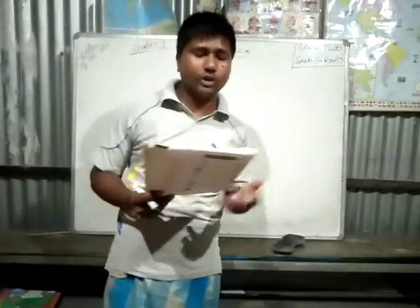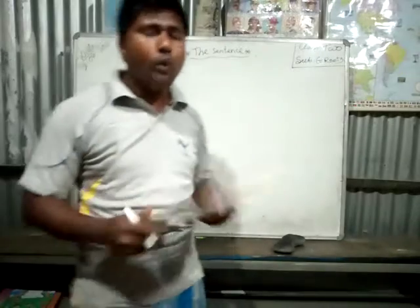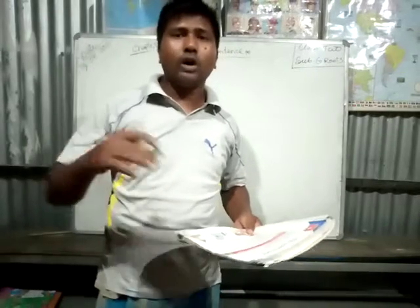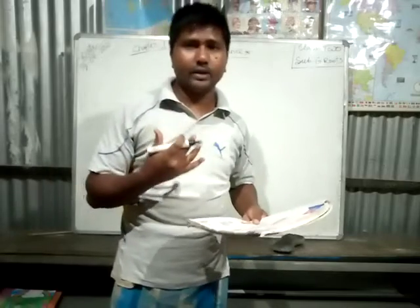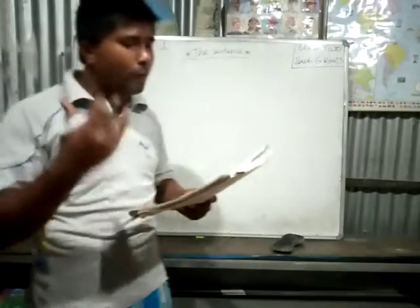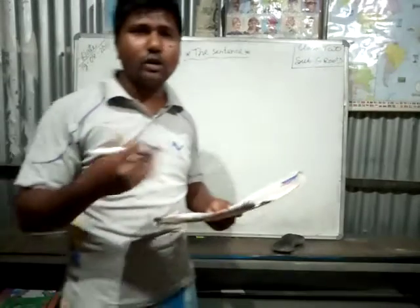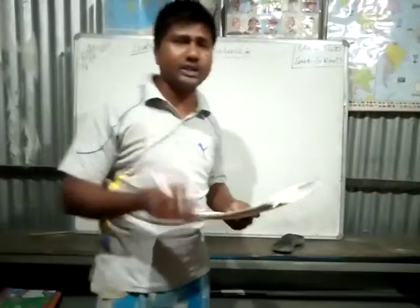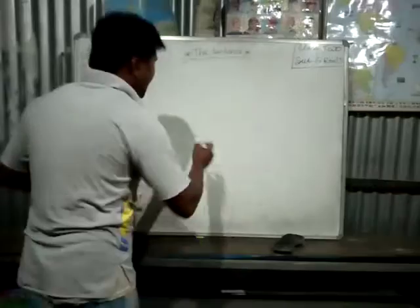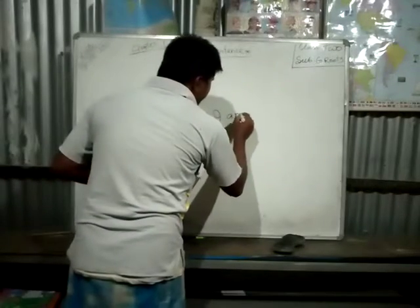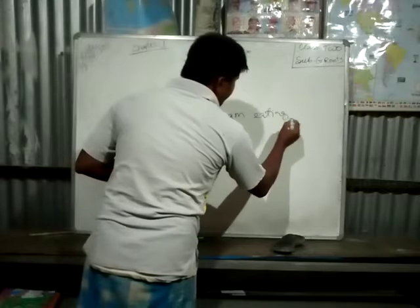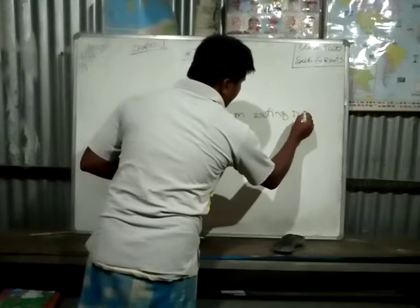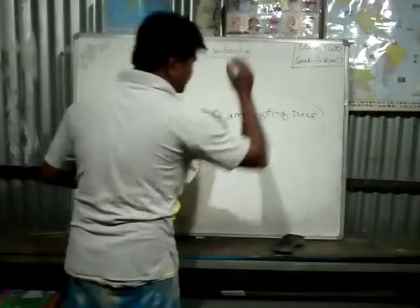How can you know what a sentence is? When we have an idea, we speak using words — to make clear whatever we think. A sentence is a group of some words. Suppose: 'I am eating rice.' That is a group of words I used.